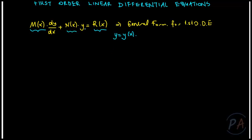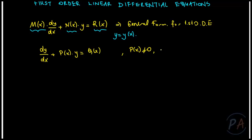The general form of a first-order linear differential equation can be written as dy/dx plus P(x) times y equals Q(x). Here we assume that P(x) is different from 0 and Q(x) is also different from 0.